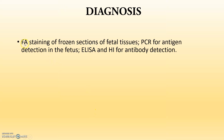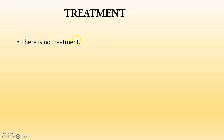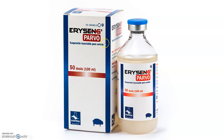Diagnosis is actually by fluorescent antigen staining of frozen sections of fetal tissue. Immunity is lifelong once the pig is affected with parvovirus and becomes seronegative — it will have lifelong immunity. There is no treatment but you can give supportive care. Prevention and control is through proper hygiene practices and vaccines. This is the vaccine used in case of porcine parvovirus. Thank you guys.